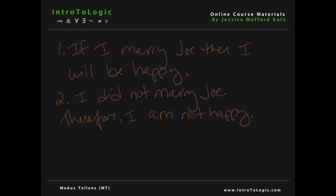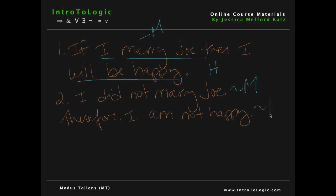Now, to determine whether this is a form of modus tollens, we need to break up each sentence into symbolic notation. The sentence 'I marry Joe' can be symbolized with the letter M, 'I will be happy' with the letter H, 'I did not marry Joe' would be not M, and 'I am not happy' would be not H. So we have: premise 1 — if M, then H; premise 2 — not M; and therefore we conclude not H.